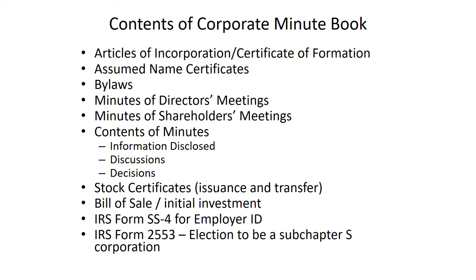If a corporation does not elect to be a Subchapter S corporation, then the corporation is treated as a separate taxable entity, and you run the risk that profits may be taxed twice — once when the corporation receives them, and again when the corporation distributes those profits to the shareholders. That's a situation you want to avoid. For most small businesses, certainly something to discuss with a CPA or tax advisor, but the Subchapter S election is going to be the best thing to do, and that election needs to be filed within a few months after the corporation is formed.